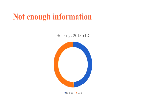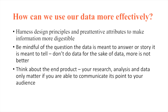So how do we fix that? What can we do to make sure that if we are putting data out, it's meaningful, and that the people who are seeing it are understanding it and getting the message from it? I'm going to talk about three things to keep in mind. The first one is: harness design principles and pre-attentive attributes to make information more digestible.